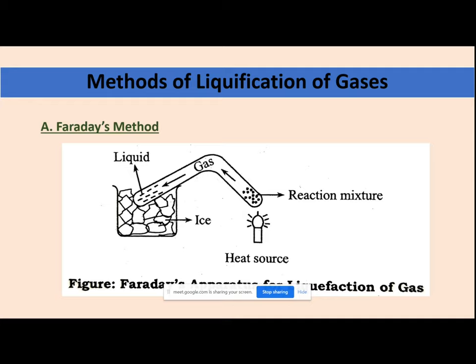The first method is Faraday's method. In Faraday's method you have a V-shaped bent tube. On one side you have your reaction mixture — a chemical reaction is occurring and some gas is getting evolved from it. You are providing heat to this reaction mixture because the reaction involves some heat energy. Some gas is getting evolved as a product.